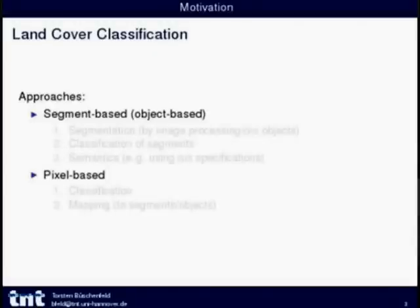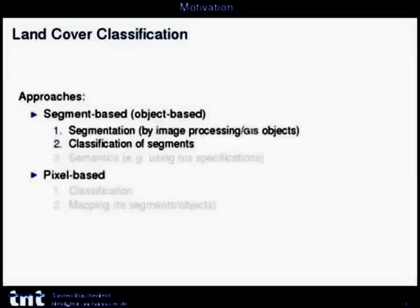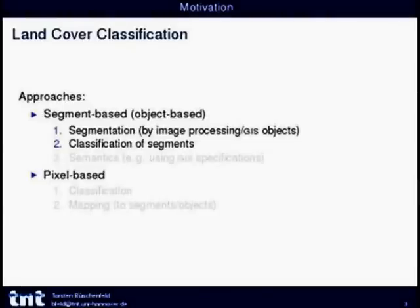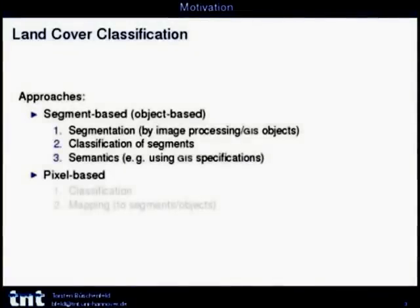Basically there are two approaches. The first is the segment-based or object-based approach — if you refer to GIS objects — where you do a segmentation first, either by image processing or by using GIS objects, and then classify the segments. But since classification is not done beyond the segment boundaries, there's some information missing, and you need certain semantics, such as specifications or rule sets, to relate these segments.